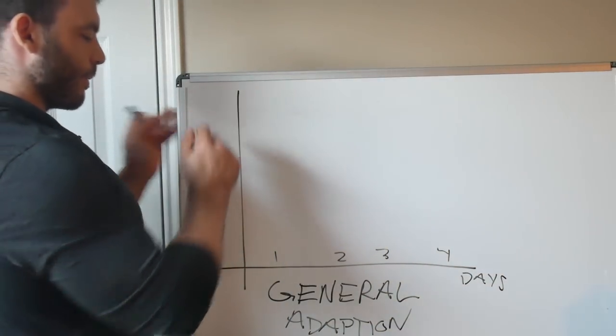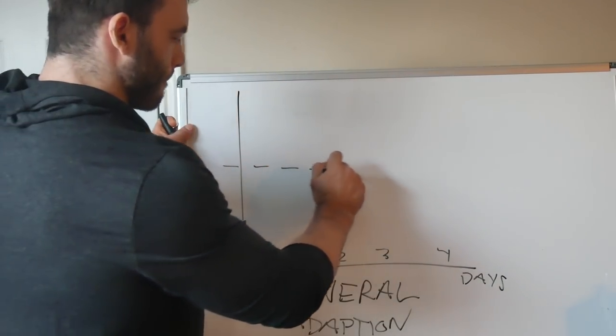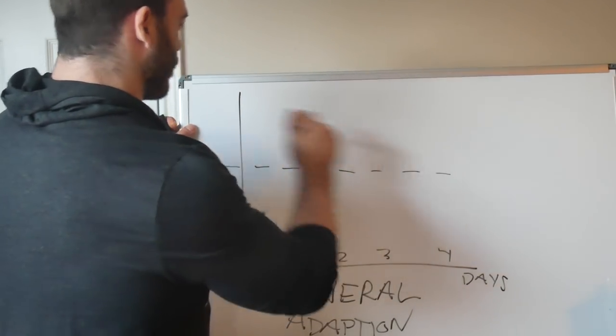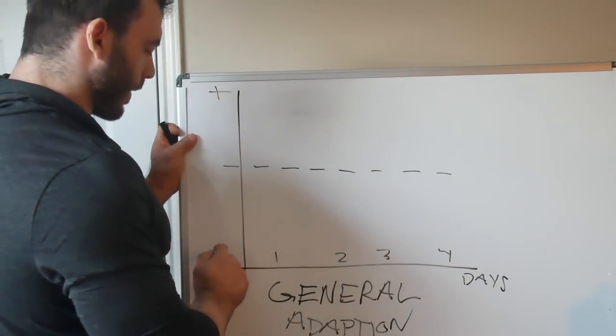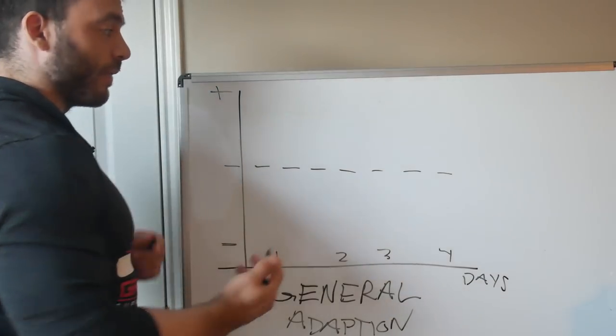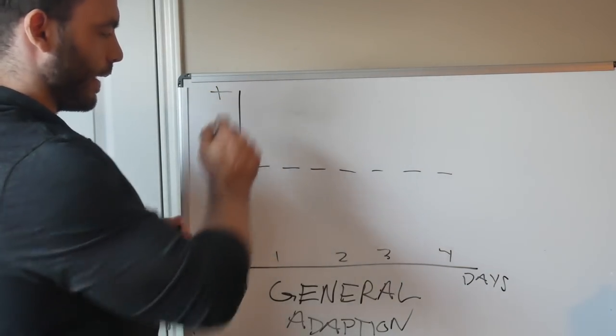And this is performance. So if we have a baseline level of performance, that's where we are now. This is good performance, so PRs, great workouts. This is bad performance, so missing reps, perhaps even getting weaker. Obviously, our goal is to go from here to here.